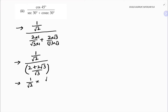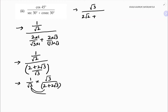The division becomes a reciprocal multiplication: 1/√2 multiplied by √3/(2 + 2√3). Expanding the denominator: √2 × 2 = 2√2, and √2 × 2√3 = 2√6. So we get √3 divided by (2√2 + 2√6).